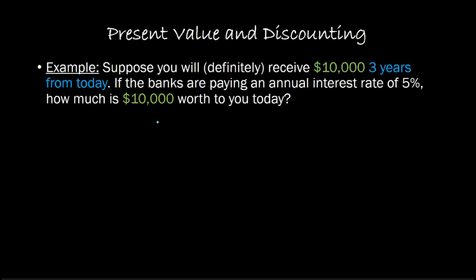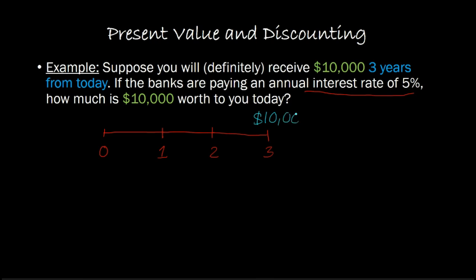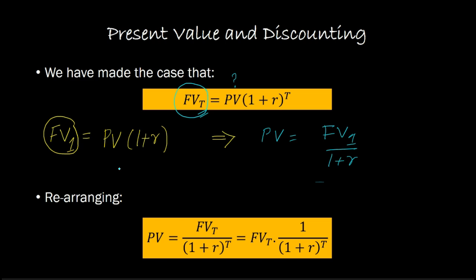Let's implement this in a simple setting. Suppose you will definitely receive ten thousand dollars three years from today, and it is known that banks are paying an annual interest rate of 5%. How much is this ten thousand dollars worth to you today? It is convenient to represent this using a timeline — I highly recommend capturing these questions on a timeline. Representing today as time period zero, and marking periods one, two, three — three years out into the future we will be getting ten thousand dollars. The question is: what is this amount worth in the present?